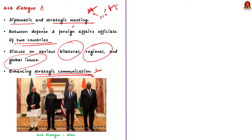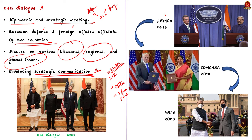The US often conducts 2+2 dialogues with key partners, including India. US is India's oldest and most important 2+2 talk partner. The first 2+2 dialogue between the two countries was held during the Trump administration in 2018. With these dialogues, India and US have signed three foundational pacts for deep military and strategic cooperation: the Logistics Exchange Memorandum of Agreement (LEMOA) in 2016, the Communication Compatibility and Security Agreement (COMCASA) in 2018, and the Basic Exchange and Cooperation Agreement (BECA) in 2020.